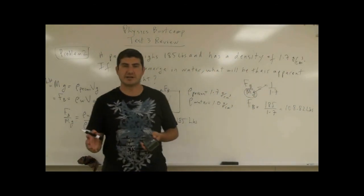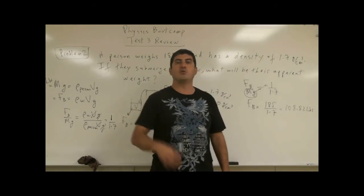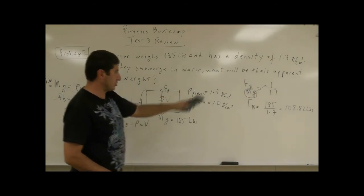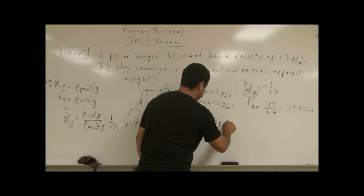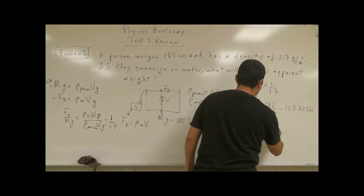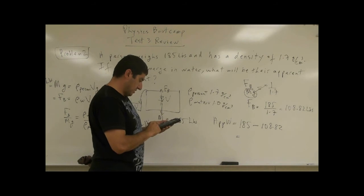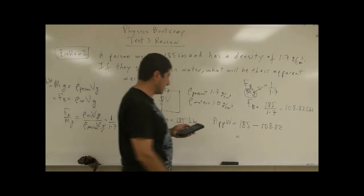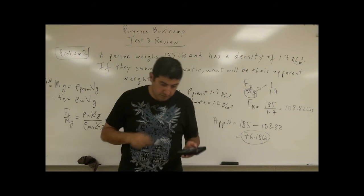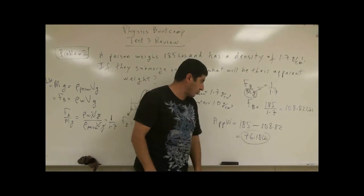Your apparent weight is the difference of the two: 185 minus 108.82, which equals 76.18 pounds. In the answer key it shows 76.2 pounds, but 76.18 pounds is correct.